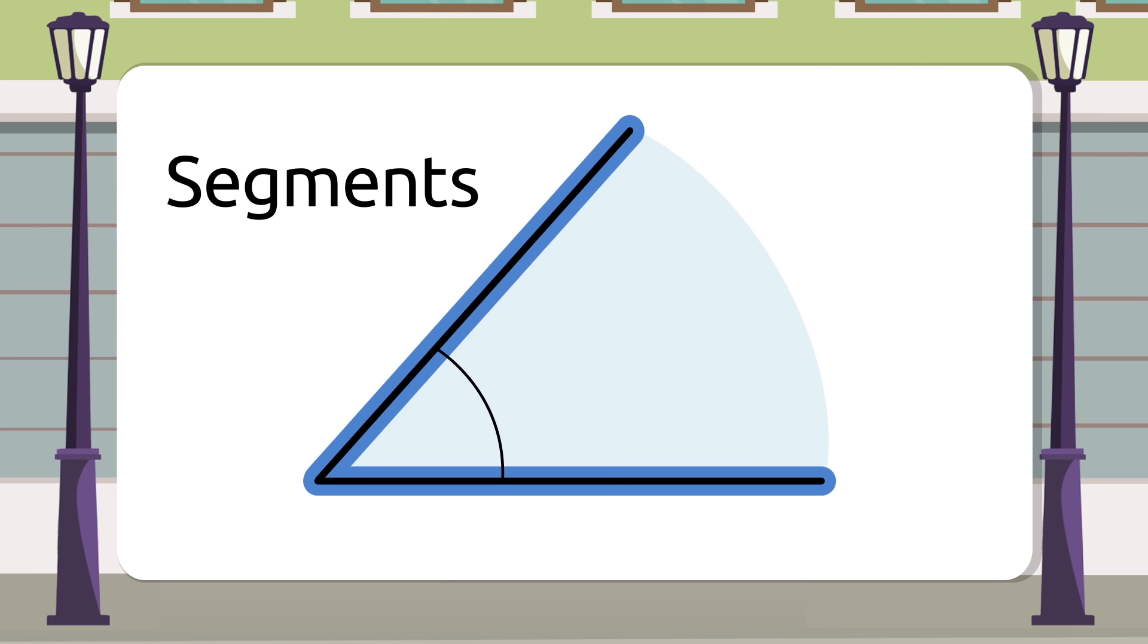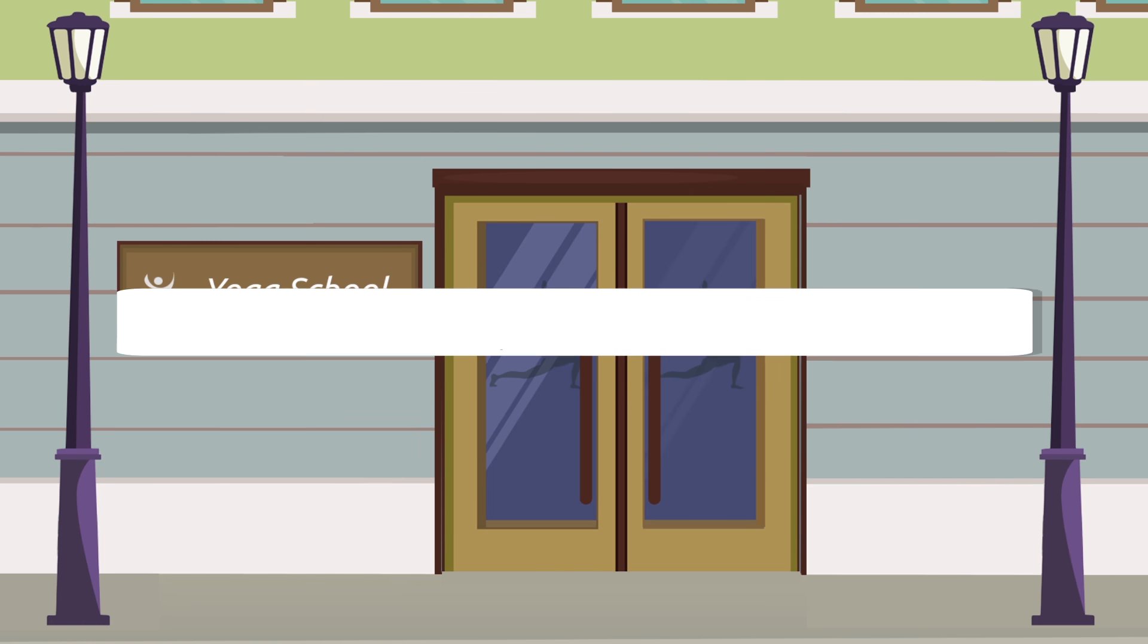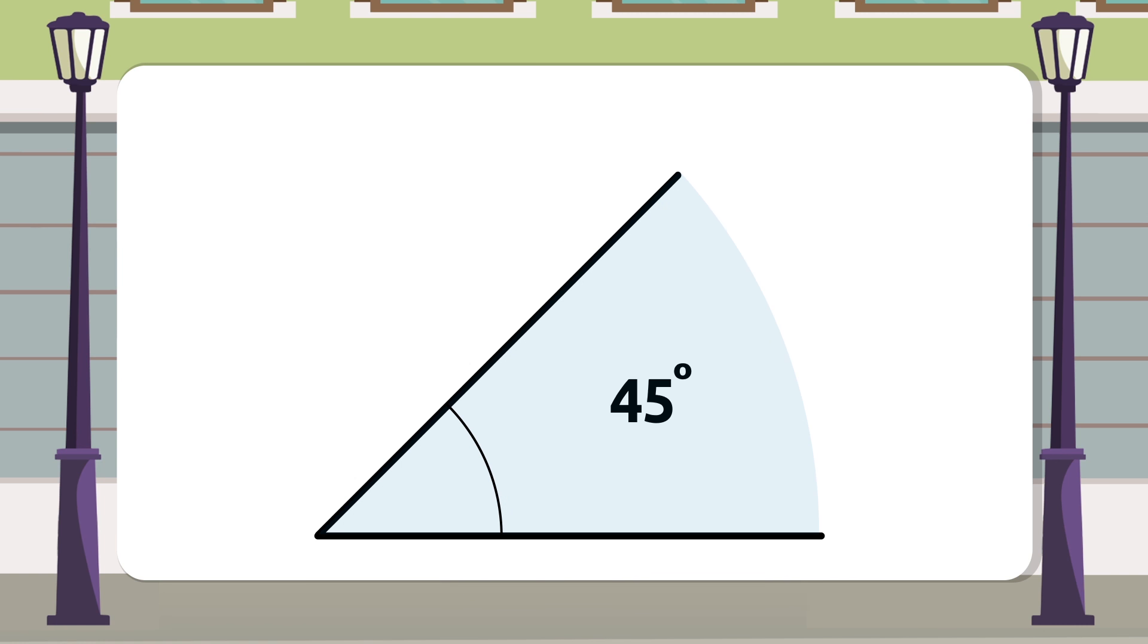The space between two straight lines that we call segments, and the point where both lines meet is called the vertex. To classify angles we measure their opening. This is measured in degrees.